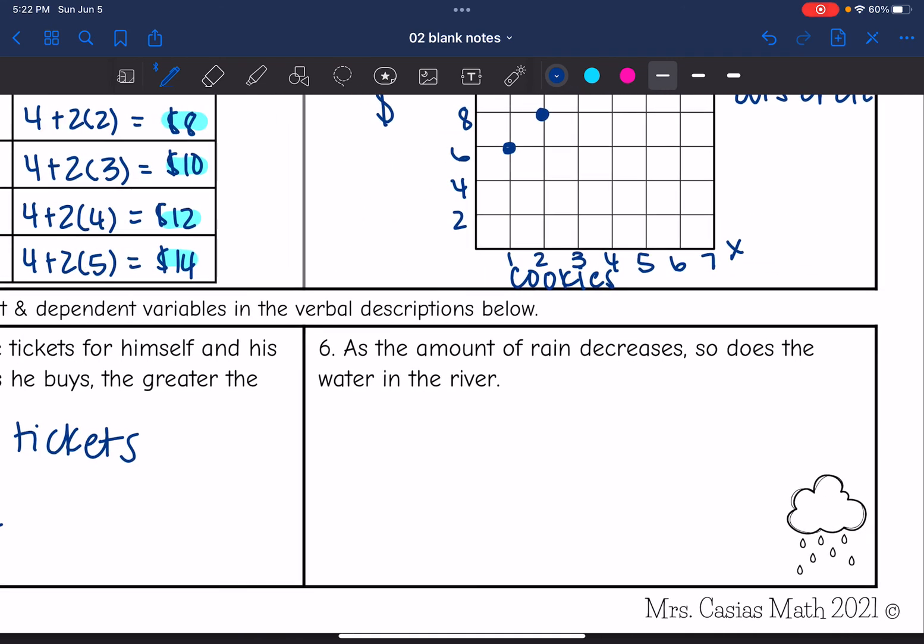Number 6 says as the amount of rain decreases, so does the water in the river. So I need to determine the independent variable here and the dependent. So the dependent is the outcome. It seems like the outcome is going to be the amount of water in the river. And what is going to determine that? The amount of rain.